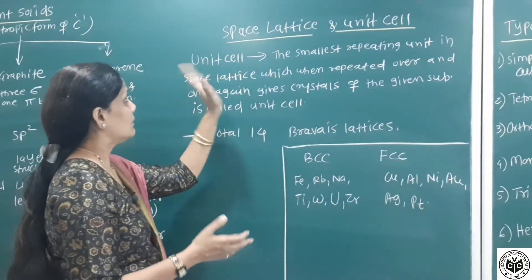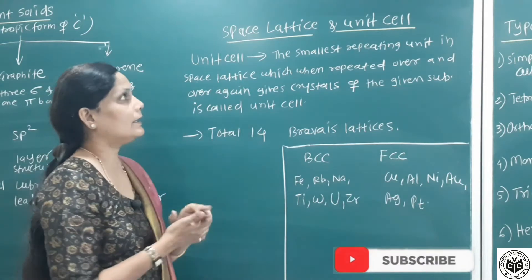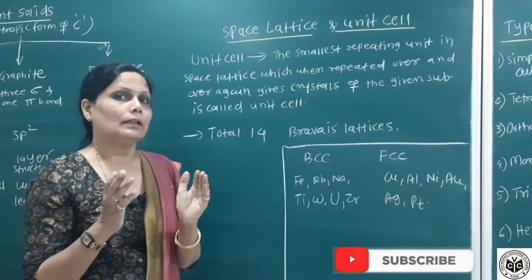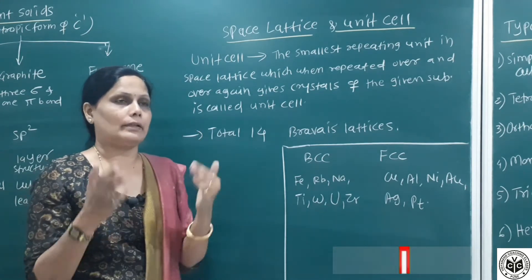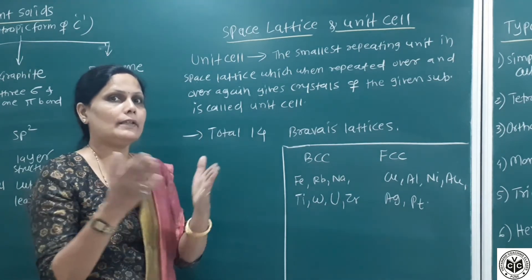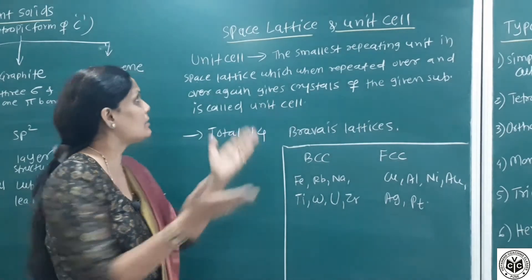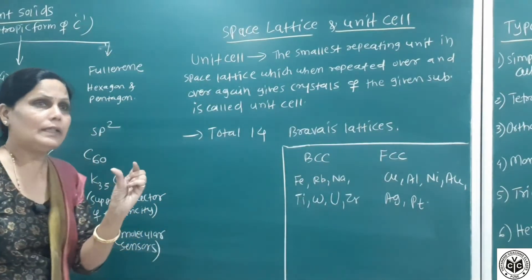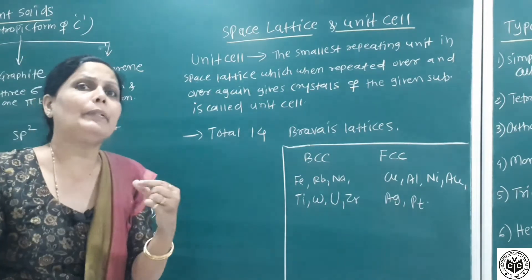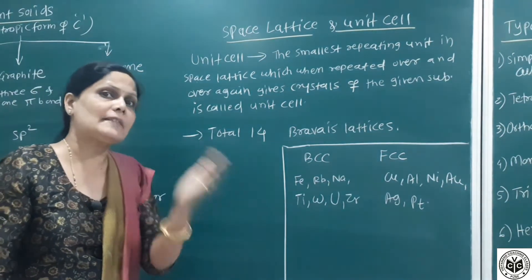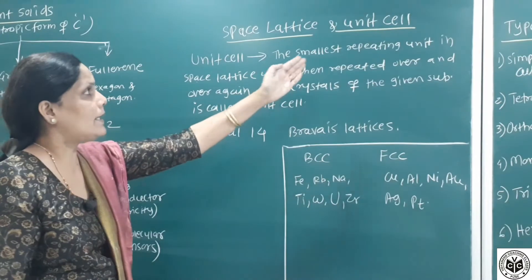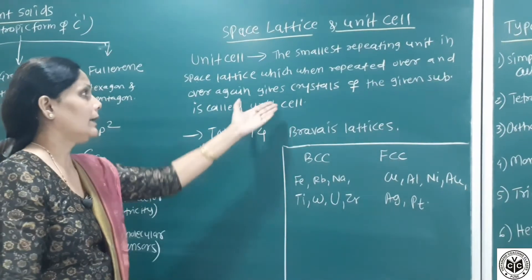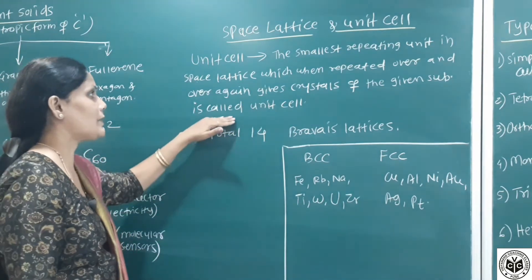Now we will see space lattice and unit cell. Space lattice means in crystalline structure, the arrangement of constituent particles—atoms, ions, or molecules—in three-dimensional space. Unit cell is the smallest repeating unit present in any space lattice, which when repeated over and over again gives crystals of that given substance.